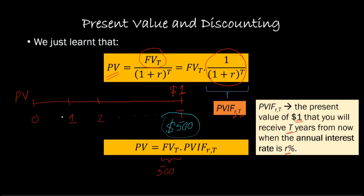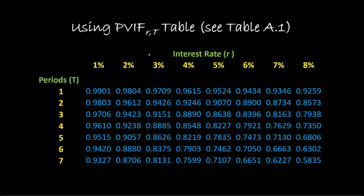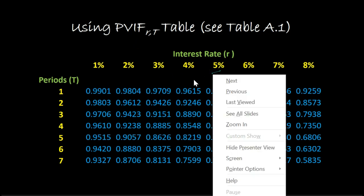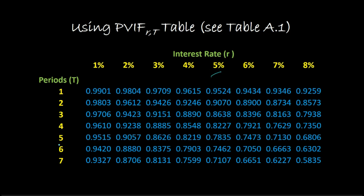Oftentimes in textbooks, you'll see a table like this, called the present value interest factor table. This shows you, for known values of r and T, what the worth of $1 would be to you today. For example, if we're receiving $1 five years from now, and the discount rate is 5%, then this table shows that $1 is only worth $0.7835 to us today.